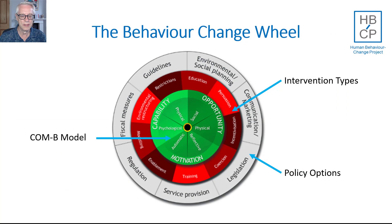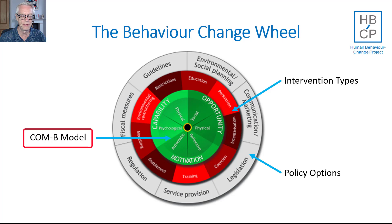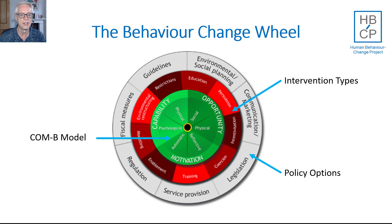The Behaviour Change Wheel consists of a core, which is the COM-B model — the Capability, Opportunity, Motivation, Behaviour model. This is a general model of behaviour in terms of understanding how behaviours come about at any particular moment, based on the characteristics of individuals in terms of their capability and motivation, and the situations in which they find themselves, which is opportunity.